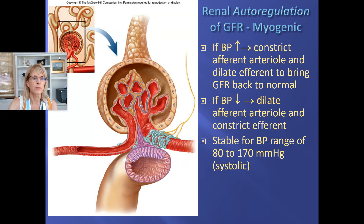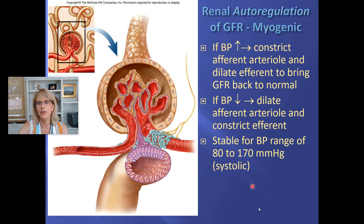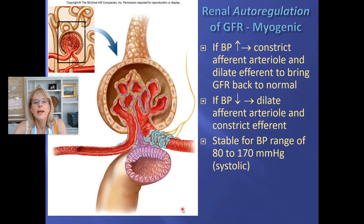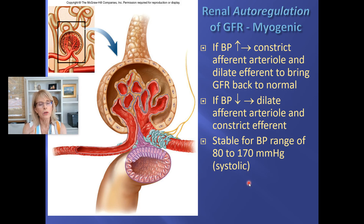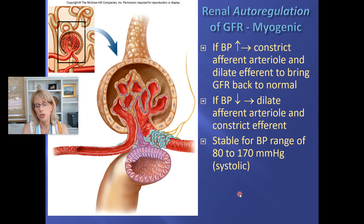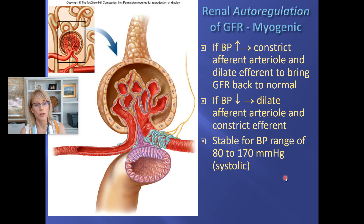The myogenic mechanism is straightforward: if blood pressure is too high, the cells constrict, bringing it back to normal. This autoregulation by the juxtaglomerular cells is only functional within a blood pressure range of 80 to 170 mmHg systolic. When a patient's systolic pressure dips below 80, this system cannot maintain an adequate glomerular filtration rate — something that can occur in very dehydrated or shocky patients.